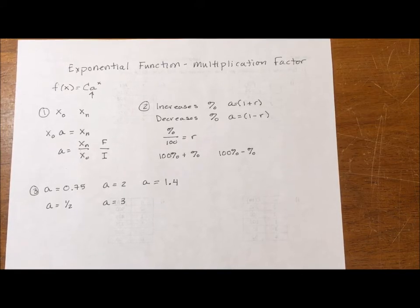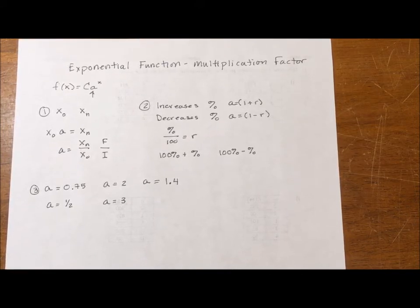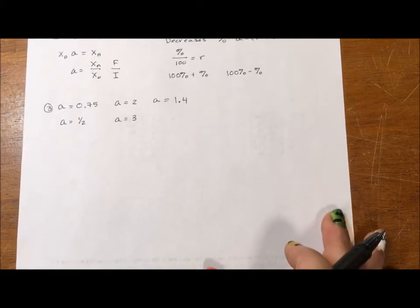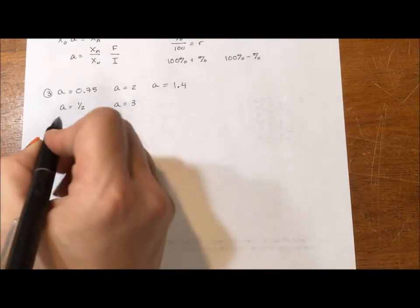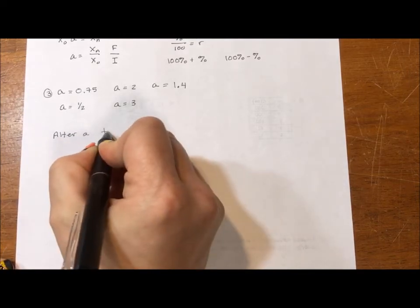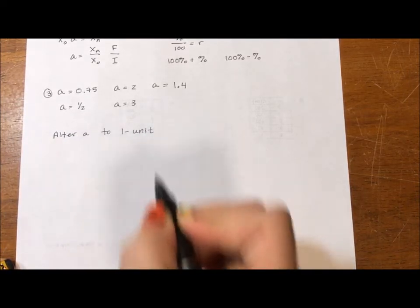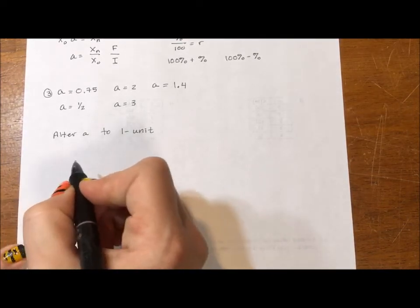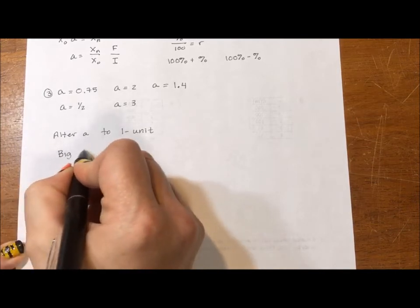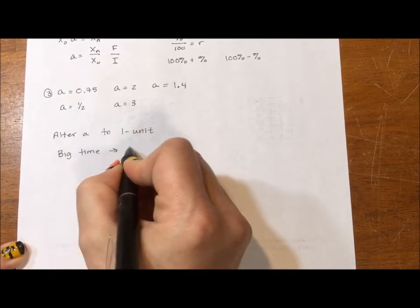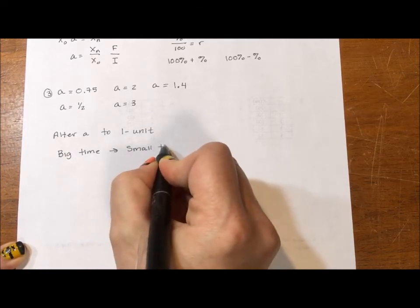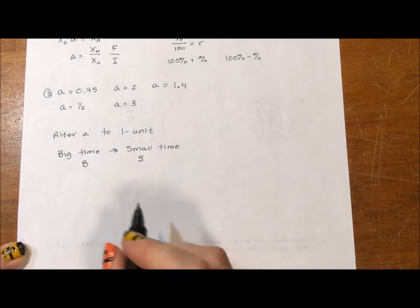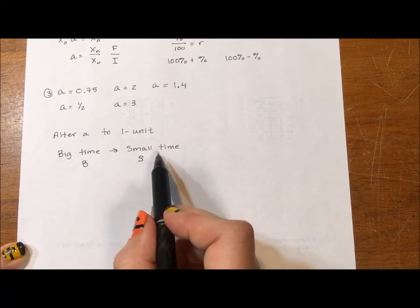Then the second part of all of this. You figured out the A, but you figured it out in some time factor that might not be your one unit. So our next challenge, now that we have A, is we need to alter it. Alter A to one unit. So let's say that you were given three months down to one month.